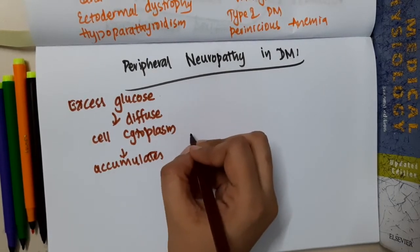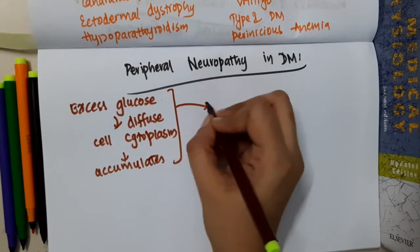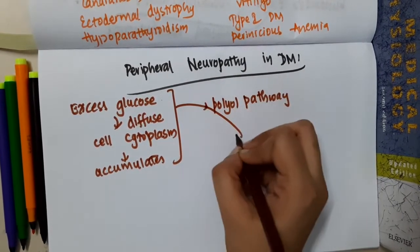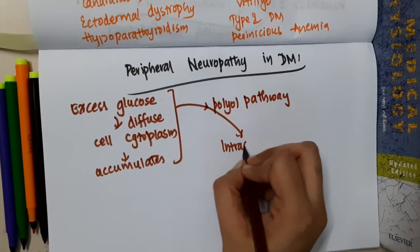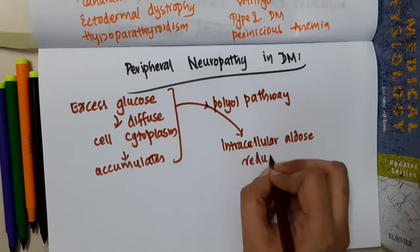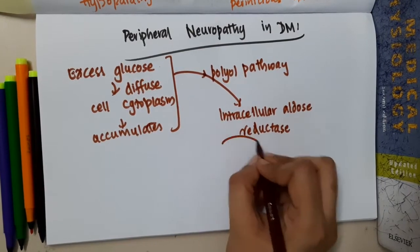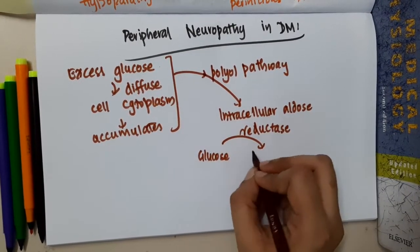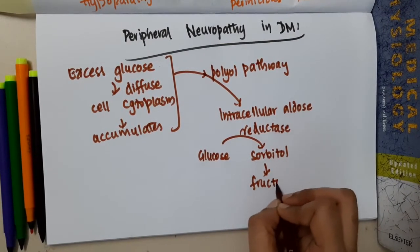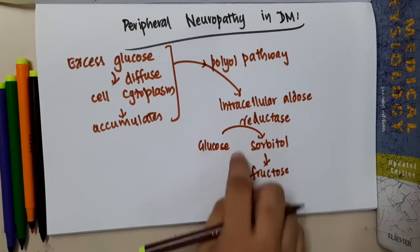This excess glucose, via the polyol pathway, activates intracellular aldose reductase. Through this enzyme, glucose gets converted to sorbitol, and then sorbitol gets converted to fructose.